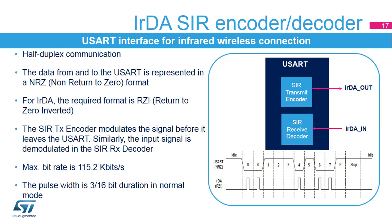The USART supports IRDA specifications, which is a half-duplex communication protocol. The data from and to the USART is represented in NRZ or non-return-to-zero format, where the signal value is at the same level through the entire bit period. For IRDA, the required format is RZI or return-to-zero inverted, where a one is signaled by holding the line low and a zero is signaled by a short high pulse. The SIR transmit encoder modulates the NRZ transmit bitstream output from the USART. The SIR receive decoder demodulates the return-to-zero bitstream from the infrared detector and outputs the received NRZ serial bitstream to the USART. The USART only supports bitrates up to 115.2 kilobits per second for the SIR NDEC.